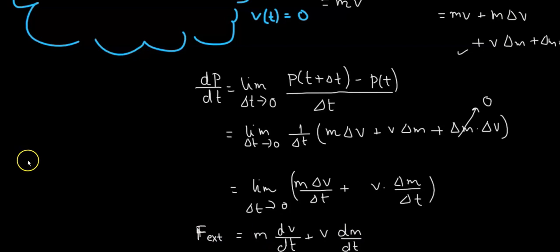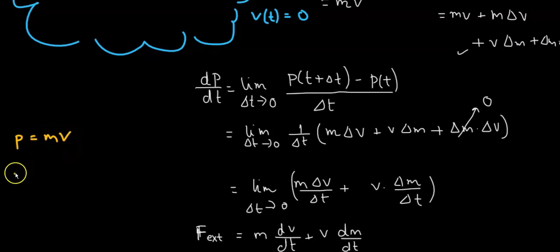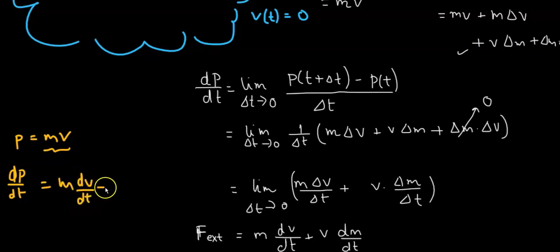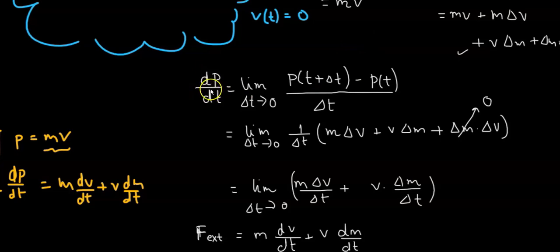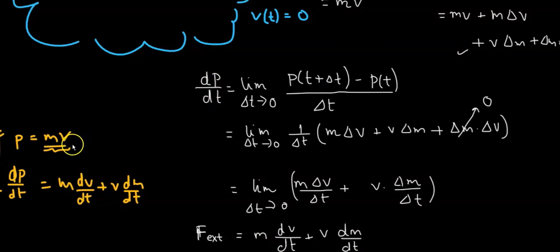One might ask: why take this long approach? After all, if p equals m times v and we apply the product rule, we get the same result: m dv/dt plus v dm/dt. However, we should not use the mechanical product rule approach. We must derive the equation by finding the initial and final momenta and using the definition of the derivative. This will become evident in the next problem.